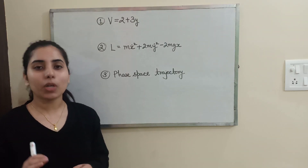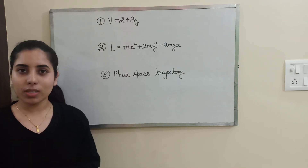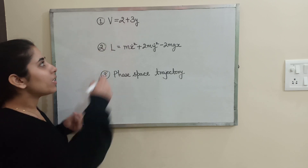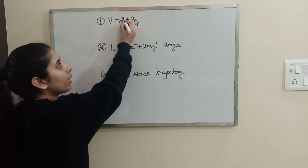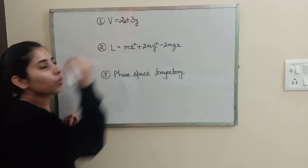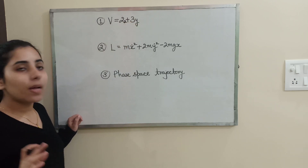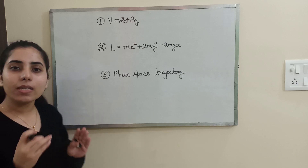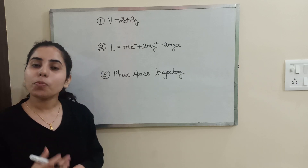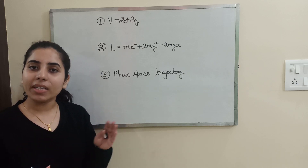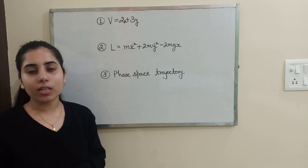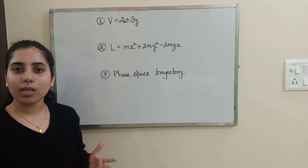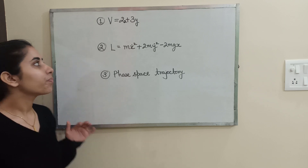If you have a potential expression in a question — for example, something like 2x plus 3y — and you are asked which of the following is a conserved quantity, with the options given as momentum components, how do you determine the answer?